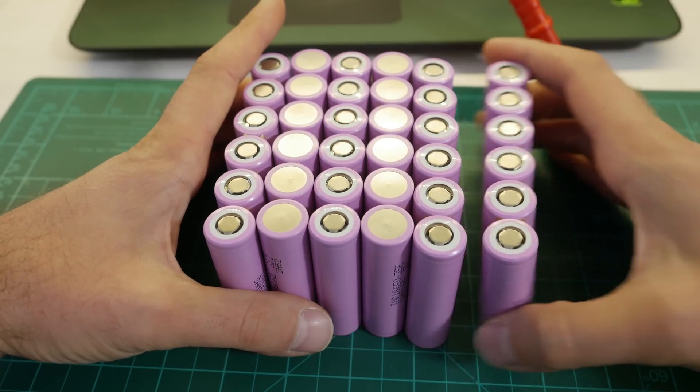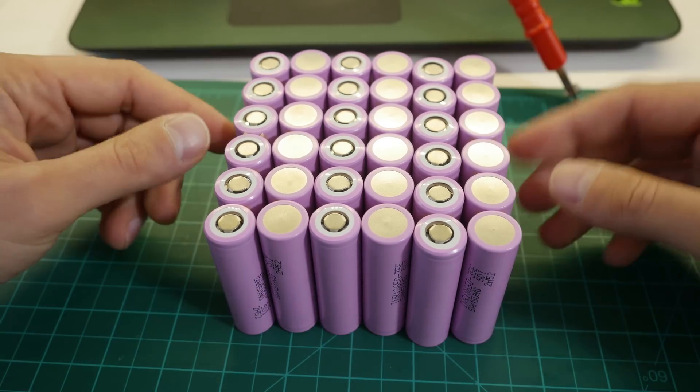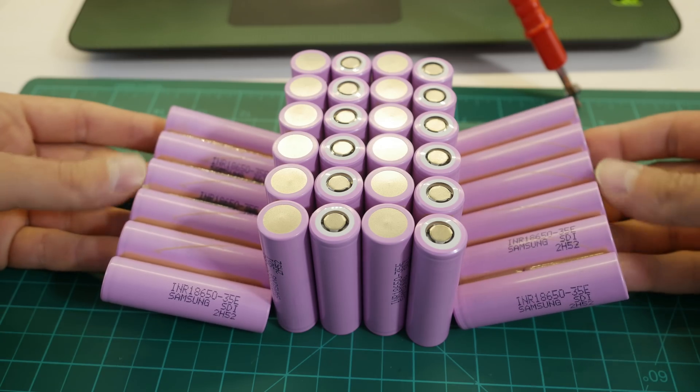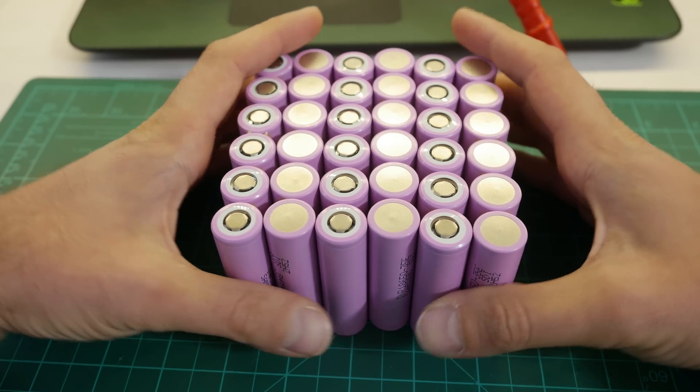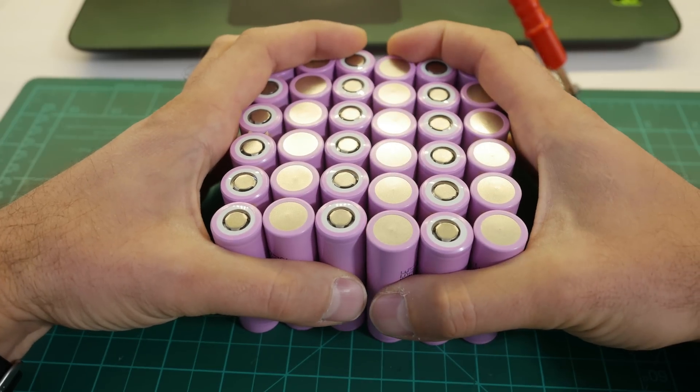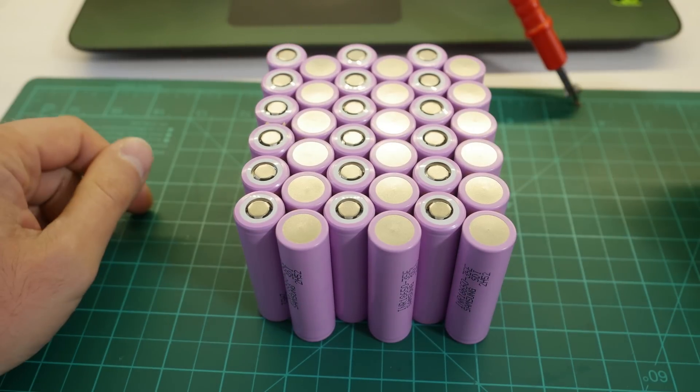To that end you need to arrange them so that every plus is next to the next cell's minus. In order to make the pack a bit more compact I decided not to have them arranged in the regular way but to offset the rolls by half a cell so they fit into each other better. This will make the whole pack more rigid and more compact.